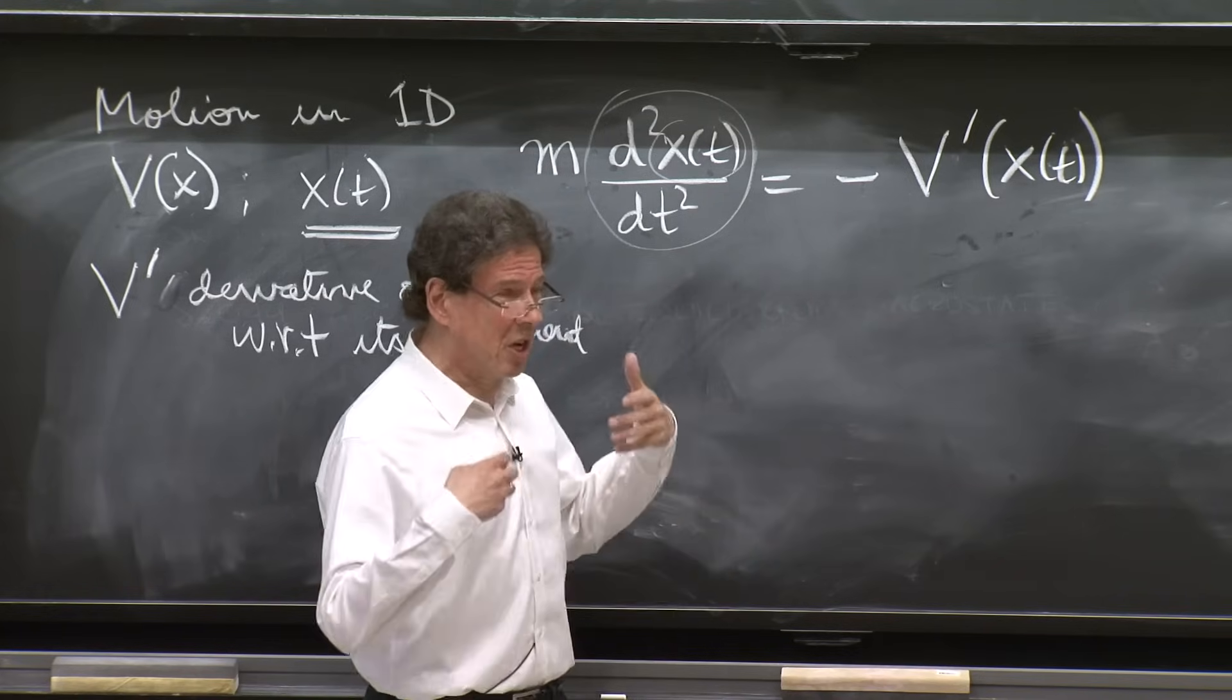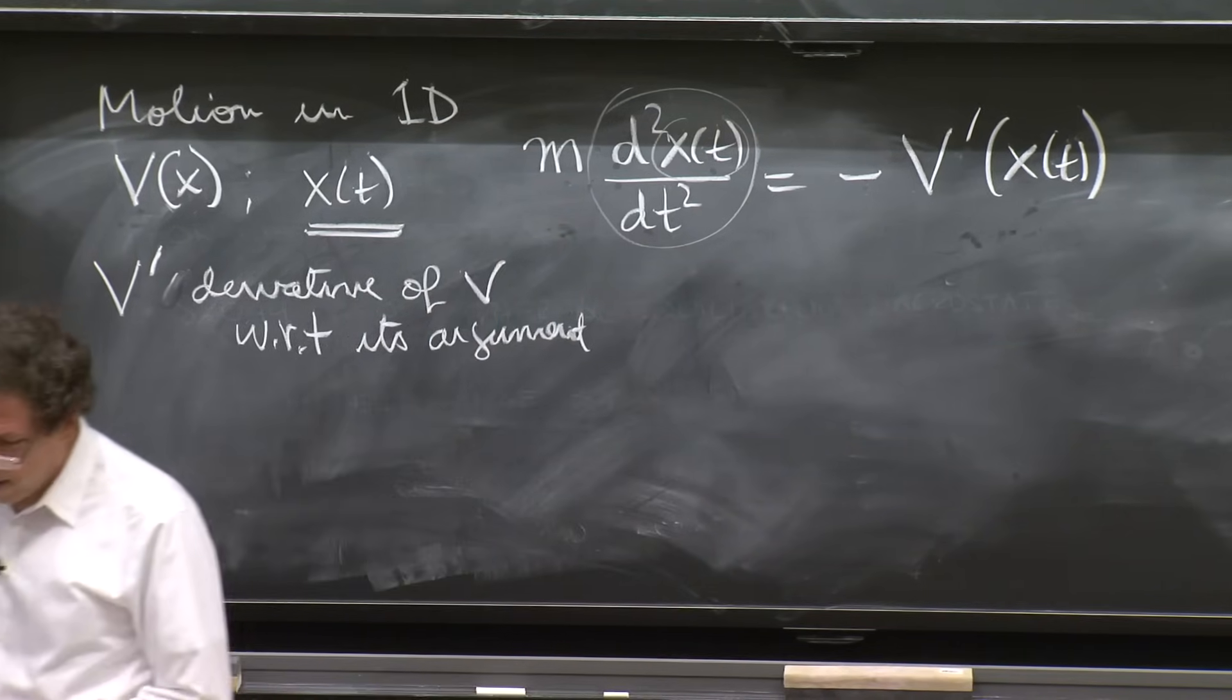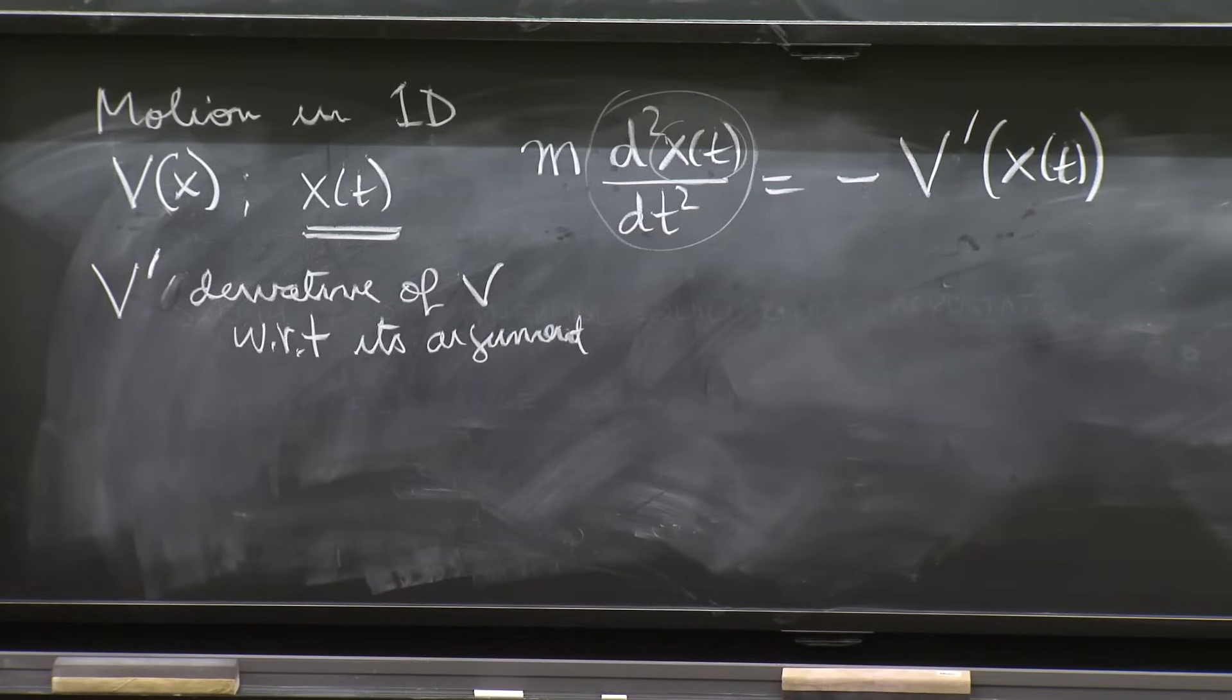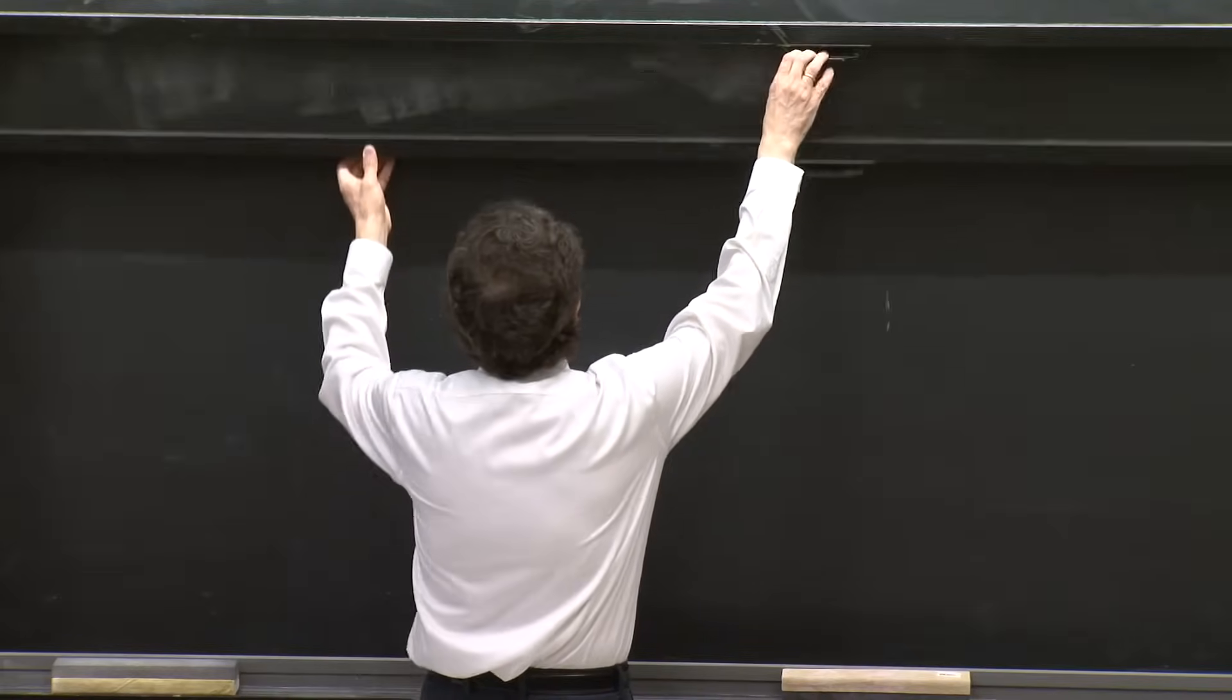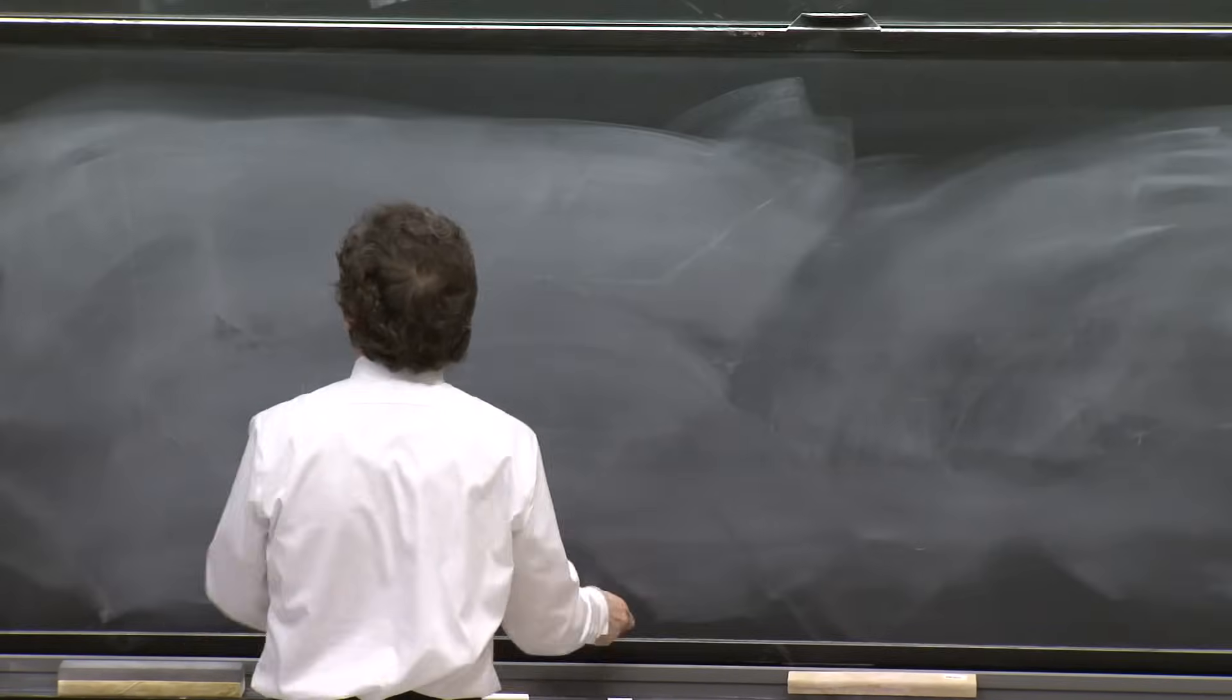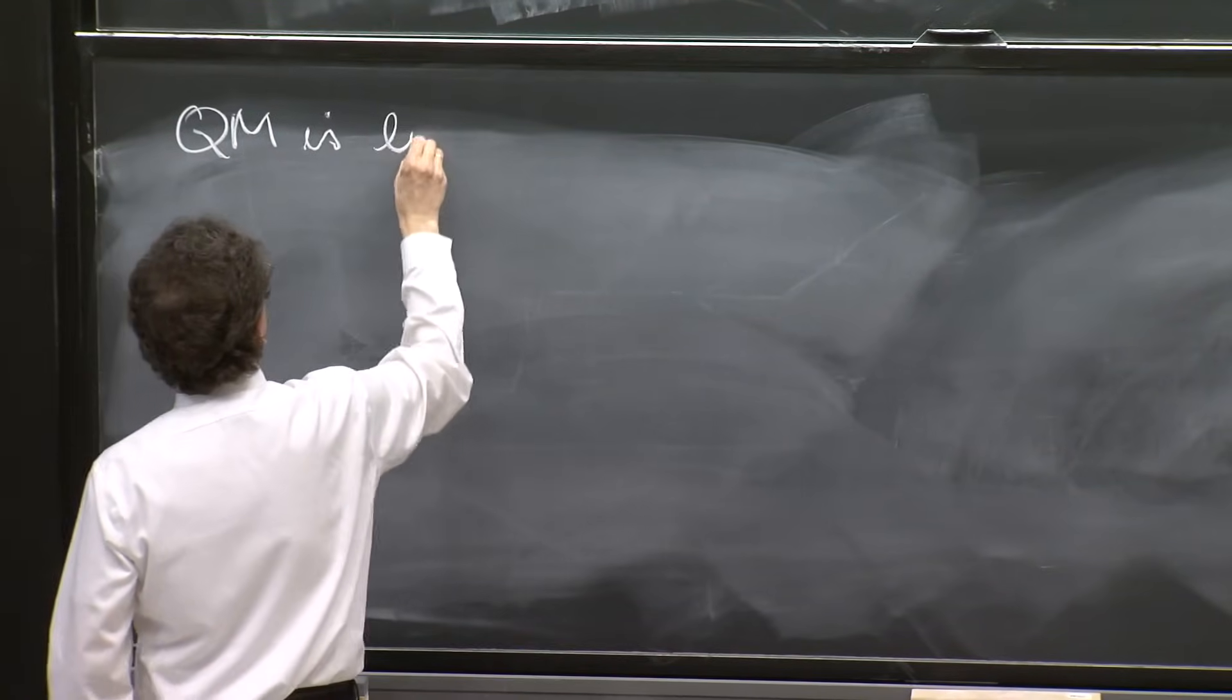And therefore, it's complicated to solve, very complicated to solve. So finally, we get to our case quantum mechanics. So in quantum mechanics, what do we have? In quantum mechanics, it is linear.